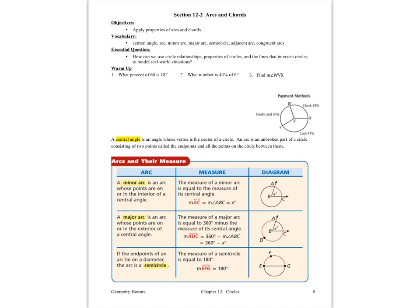Hi ladies and gentlemen, this is Ms. Gokin. We're back in chapter 12, this time in section 2, looking at arcs and chords. We want to apply properties of arcs and chords, and our vocabulary includes central angle, arc, minor arc, major arc, semicircle, adjacent arc, and congruent arcs.